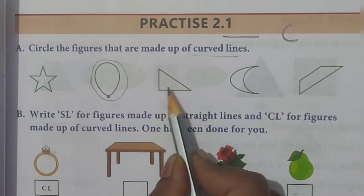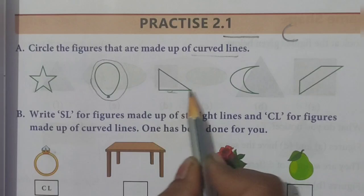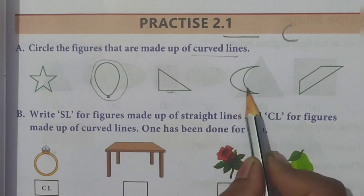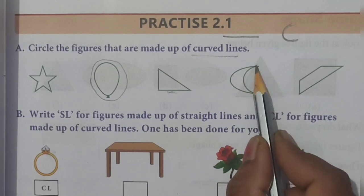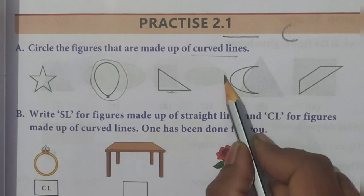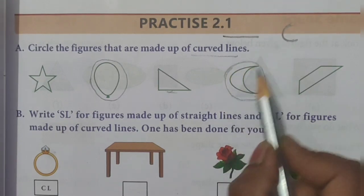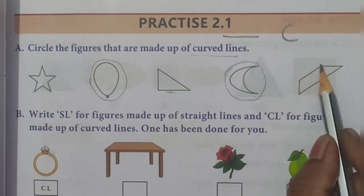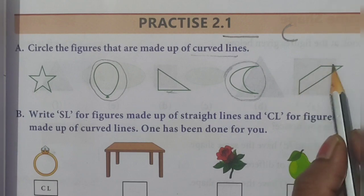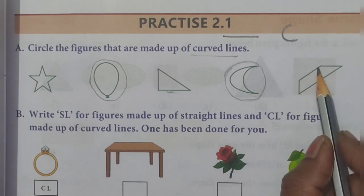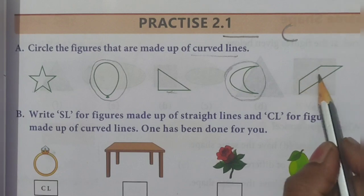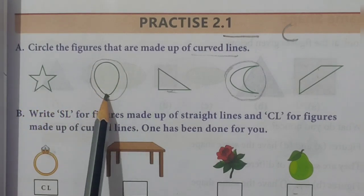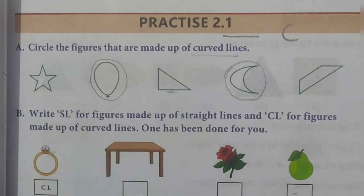Now see the moon shape. This figure is made up of curved lines — both lines are curved. Therefore we will circle this figure. The last figure is made up of straight lines with no curved lines, so we will not circle it. We only circle figures made up of curved lines — therefore the balloon and the moon shape are circled.